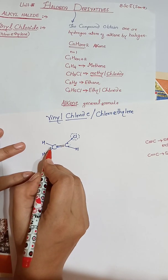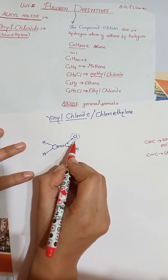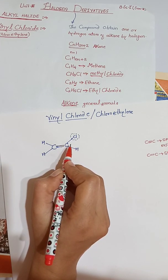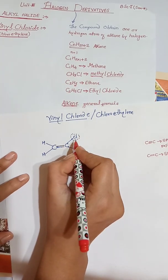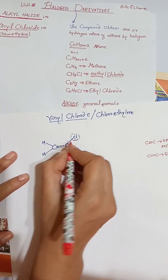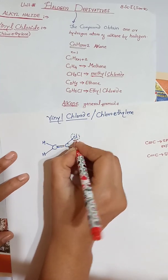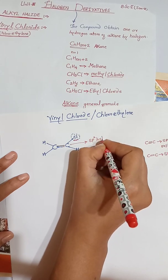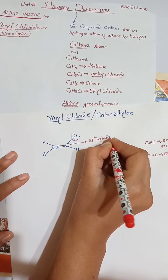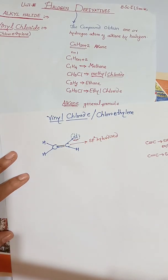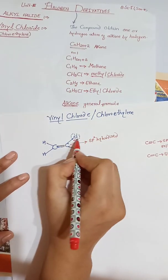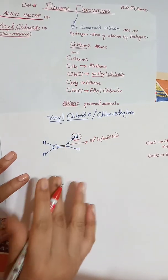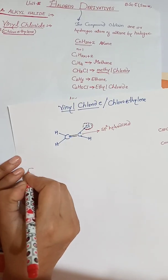The definition of vinyl chloride: vinyl chloride is the compound obtained by replacing one hydrogen atom of ethylene. In vinyl chloride, the chlorine atom is bonded to an sp2 hybridized carbon atom. Previously there was a hydrogen atom at that position; now we have replaced it by chlorine.